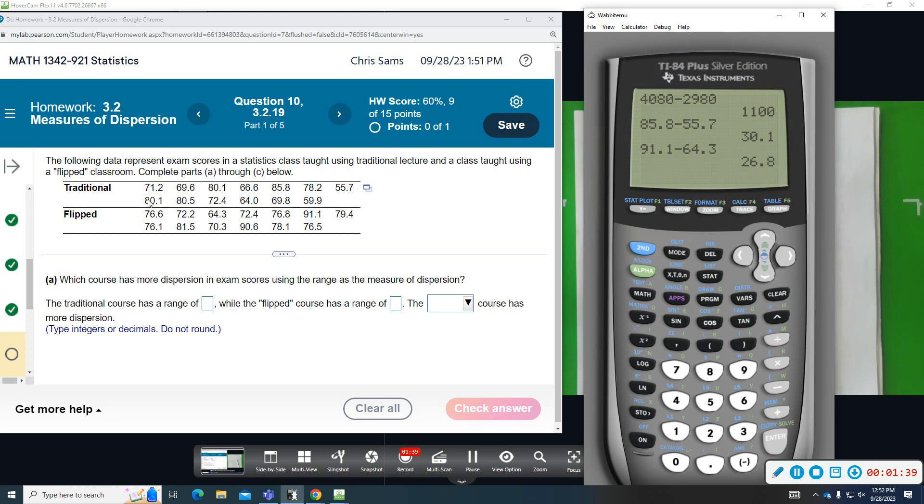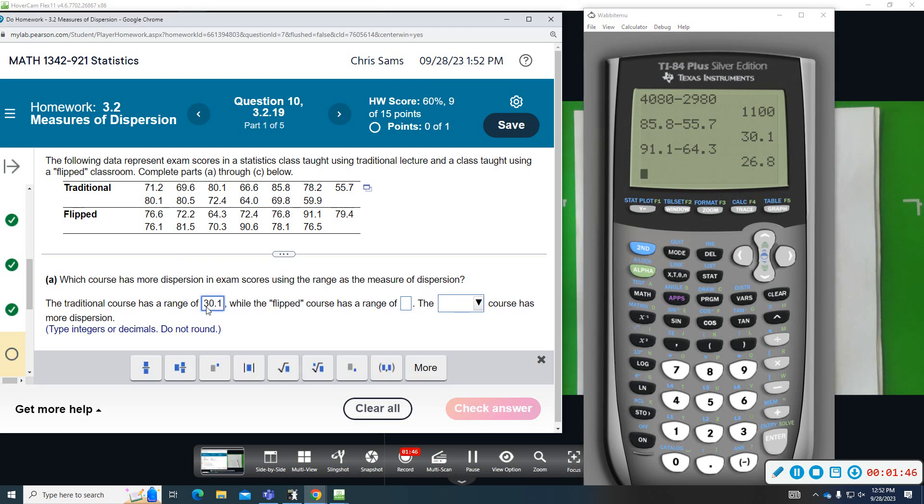You get 26.8. So traditional class has a bigger range. The traditional has a range of 30.1, flipped has a range of 26.8. The traditional course has more dispersion and is more spread out.